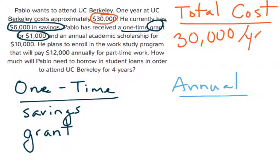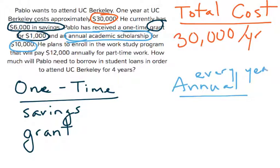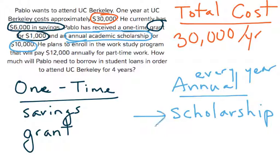The last thing here is an annual academic scholarship for $10,000 — that's a lot of money. Annual means it happens every year. So this scholarship is annual and it repeats every year. That means he gets $10,000 every single year he attends the school.